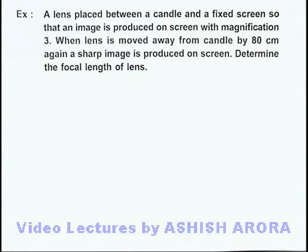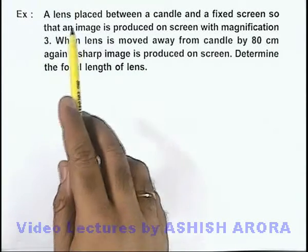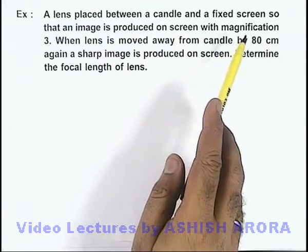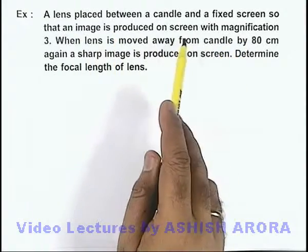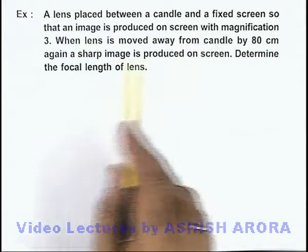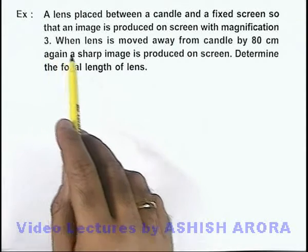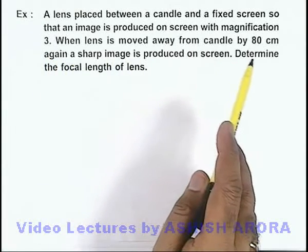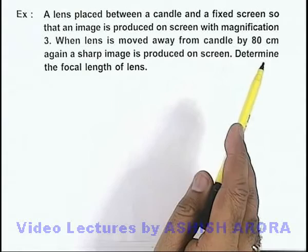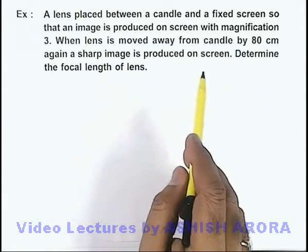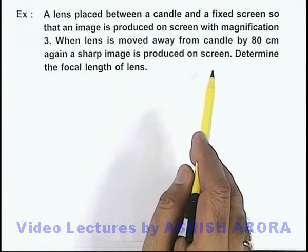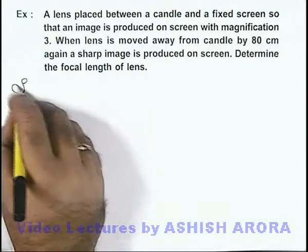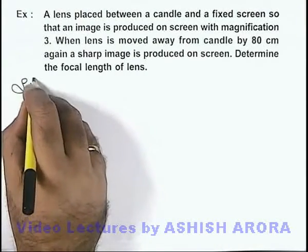In this example, we are given that a lens is placed between a candle and a fixed screen so that an image is produced on screen with magnification 3. When the lens is moved away from the candle by 80 centimeters, again a sharp image is produced on screen. We are required to determine the focal length of the lens.